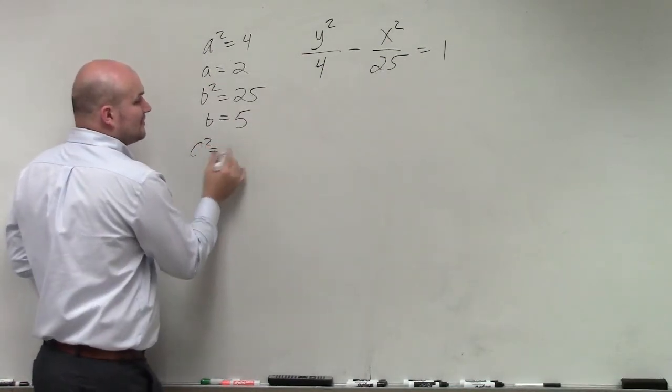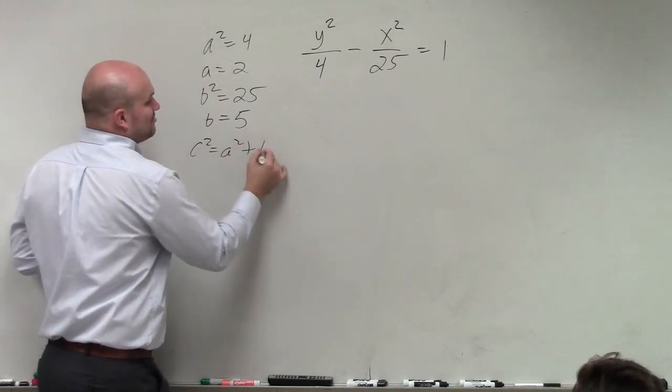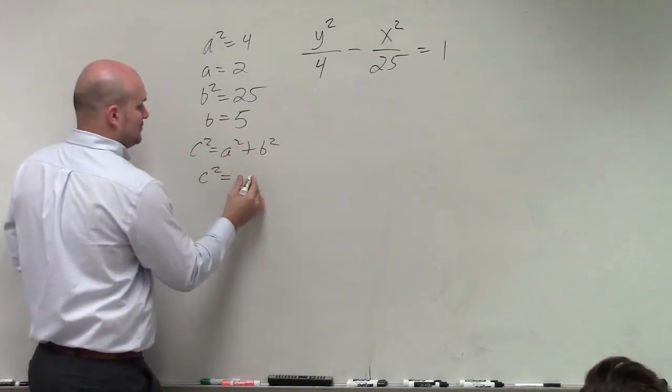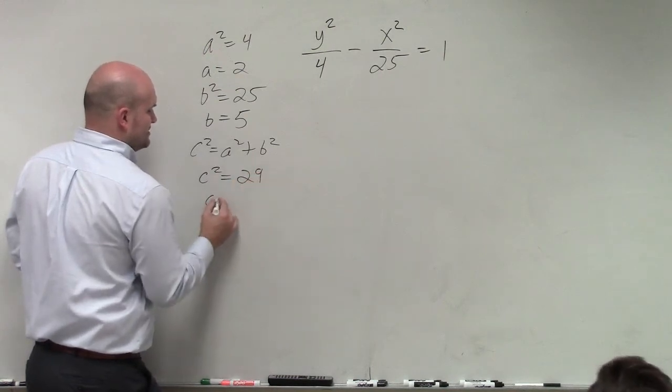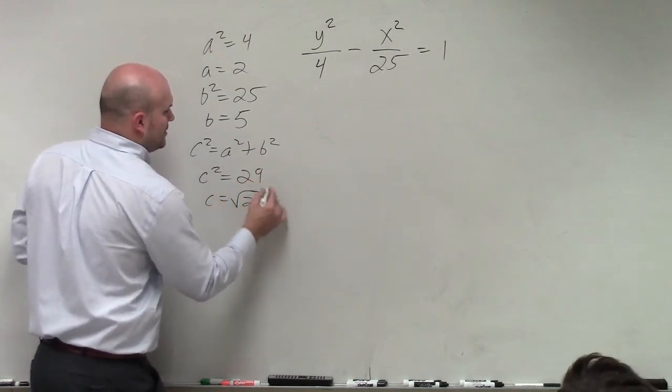c squared, remember for a hyperbola, guys, is a squared plus b squared. So therefore, c squared is equal to 29. So c equals the square root of 29, which cannot be simplified.